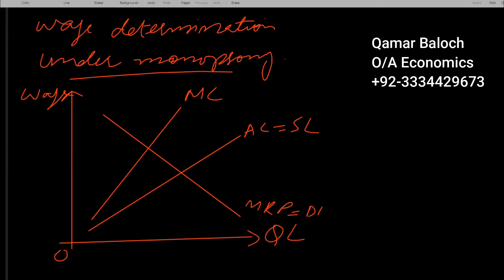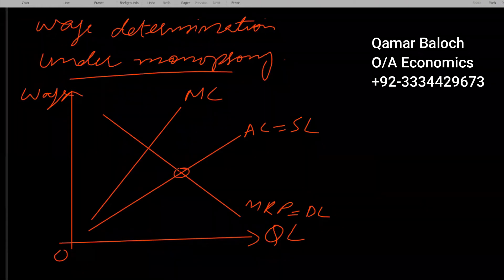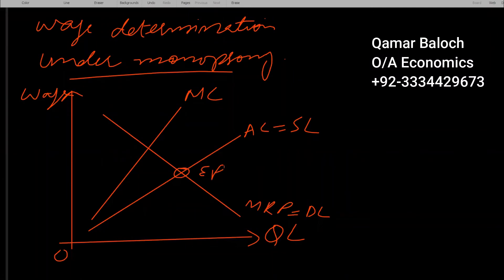So as per this figure, equilibrium as per demand and supply takes place at ep, where wage rate in the market should be wp and employment should be qp.